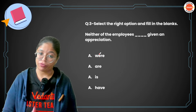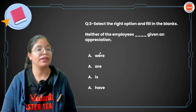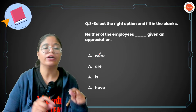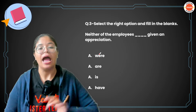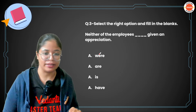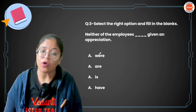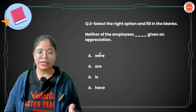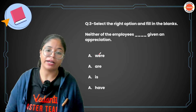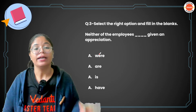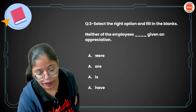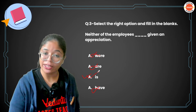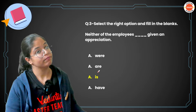Moving on to question number three: 'Neither of the employees dash given an appreciation.' Now, neither/nor or either/or combinations — you agree the verb with the second subject. But when we use 'neither of the' or 'either of the,' we always use a singular verb. 'Neither of the' means none of the two, and 'either of the' means one of the two. So singular is required — 'was' or 'has' or 'is.' The answer is: 'Neither of the employees is given an appreciation.'